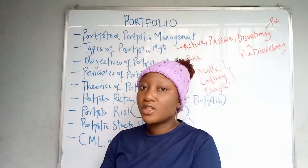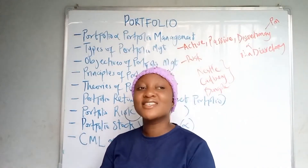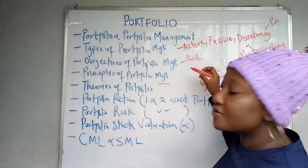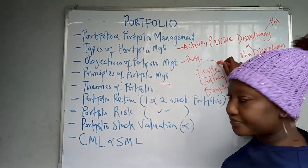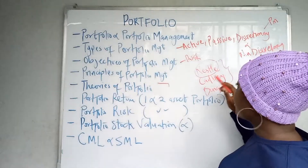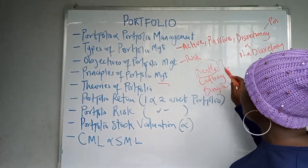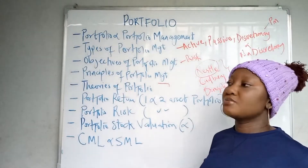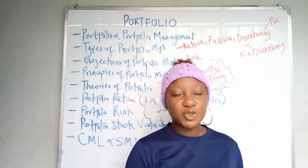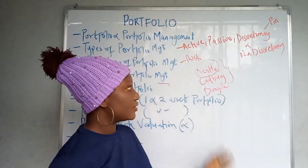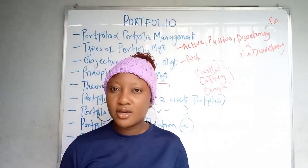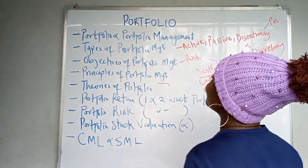The objectives of portfolio management include, first of all, reducing and managing risk. Risk is the chance of a loss — the probability that a negative occurrence will happen. The risk of investing in Nestle alone might be greater than the risk of investing in Nestle, Cadbury, and Dangote all together. When managing your portfolio, you're determining what weight to assign to each investment and diversifying your risk.